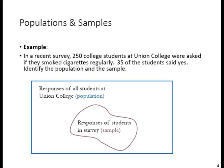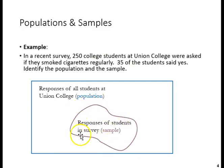As an example of these concepts, consider a recent survey given to 250 college students who attend Union College. The population involves every student who attends Union College. The survey, however, is only given to a small subset of that population, and a lot of times that is simply for efficiency and practicality, as it takes more time and effort to collect data from a population. So sampling is a powerful technique for data collection.